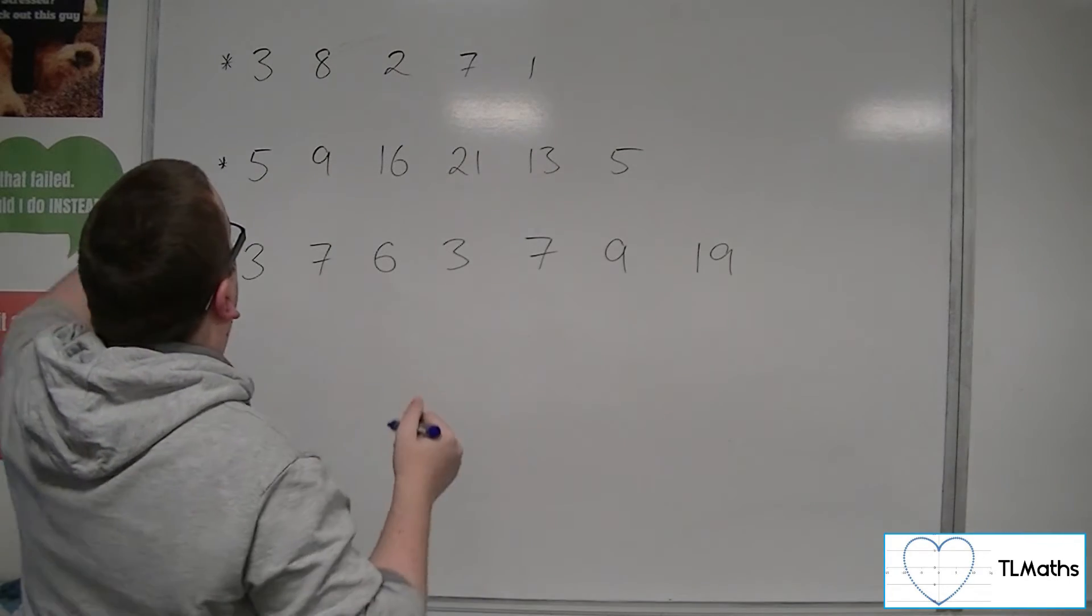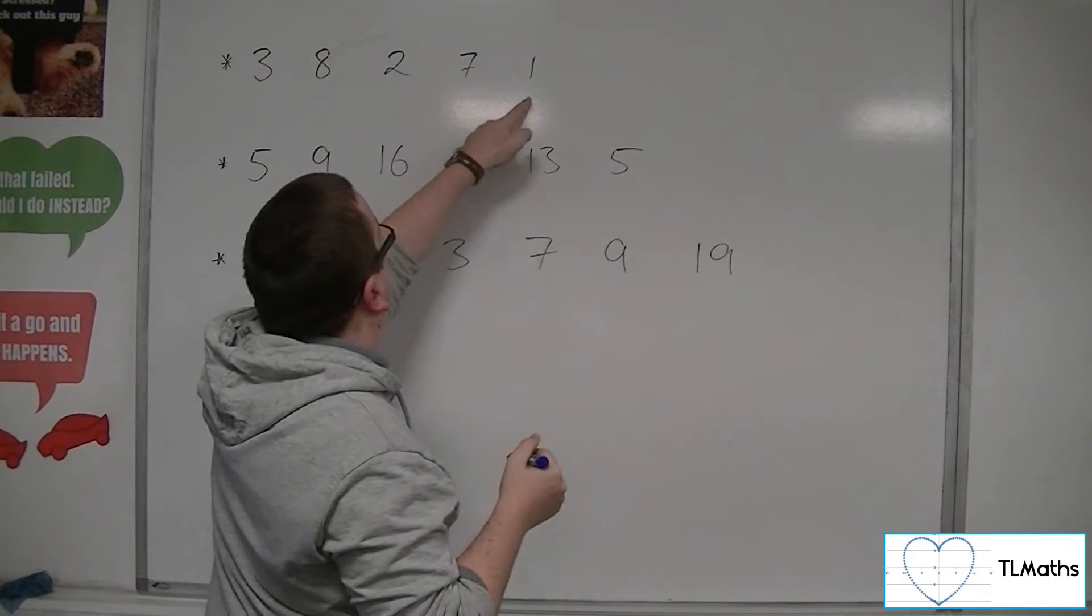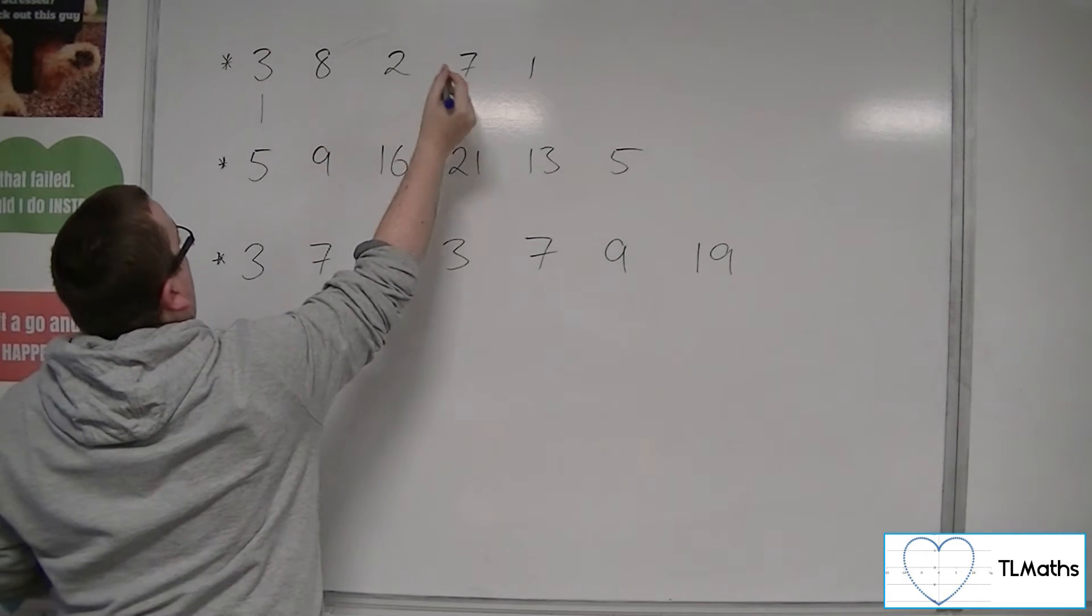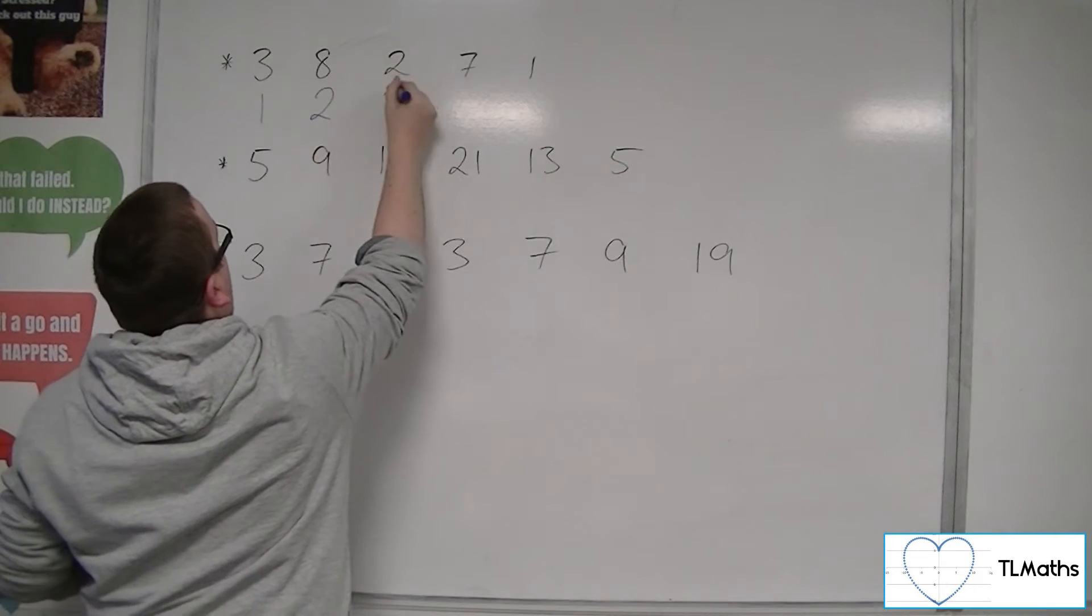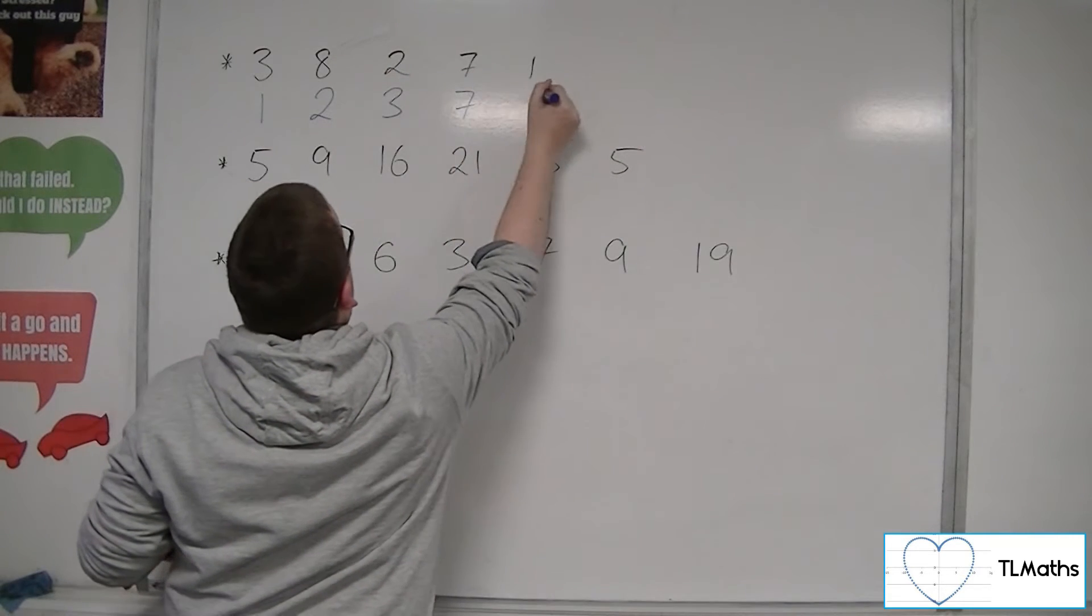So if we start with this first set, 3, 8, 2, 7, 1. We're going to have 1, then 2, then the 3, then the 7, then the 8.